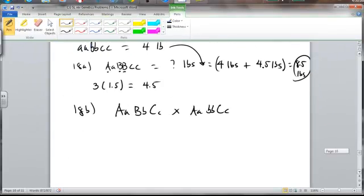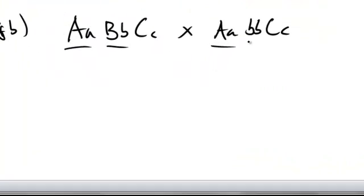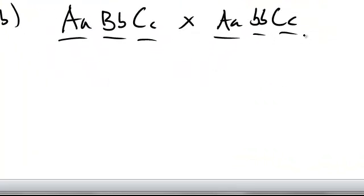Now, what we can do here is just break all this out and look at the A cross independent of the B cross independent of the C cross. So let's just do that for right now. Let's look at the A cross. Now, that's a heterozygous, heterozygous cross.